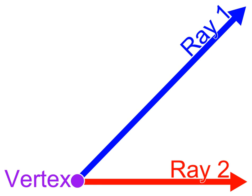Eudemus of Rhodes attributed the proof to Thales of Miletus. The proposition showed that since both of a pair of vertical angles are supplementary to both of the adjacent angles, the vertical angles are equal in measure. According to a historical note, when Thales visited Egypt, he observed that whenever the Egyptians drew two intersecting lines, they would measure the vertical angles to make sure that they were equal. Thales concluded that one could prove that all vertical angles are equal if one accepted some general notions such as: all straight angles are equal, equals added to equals are equal, and equals subtracted from equals are equal.